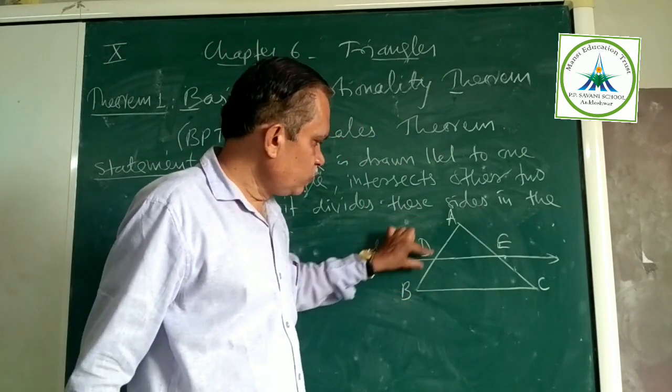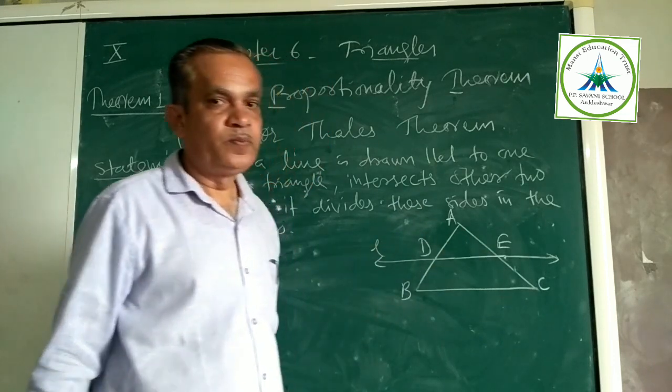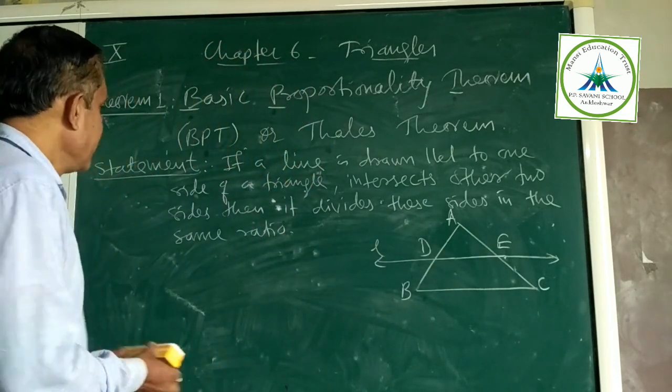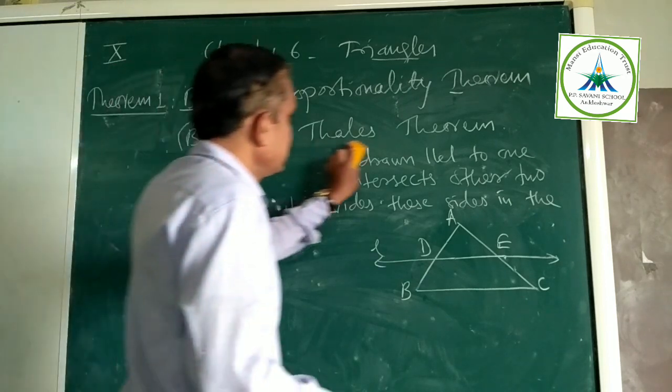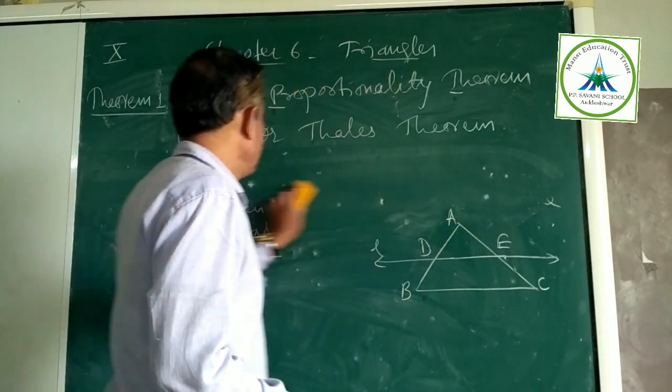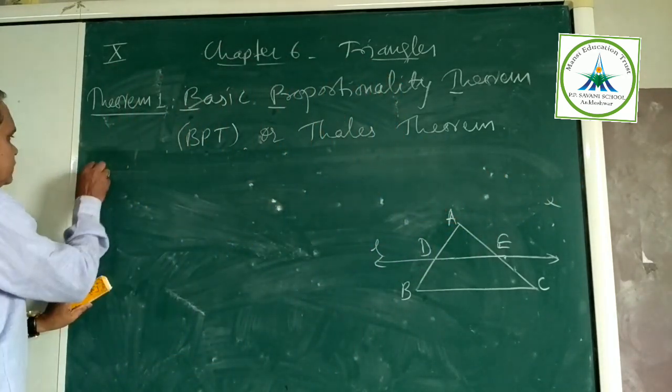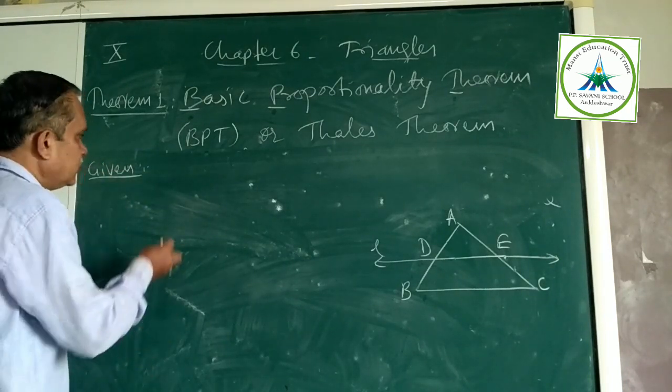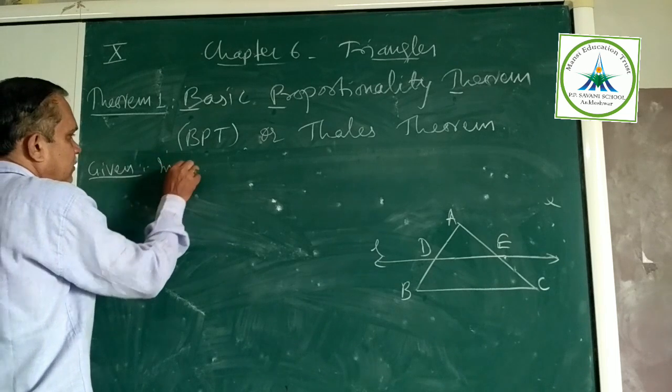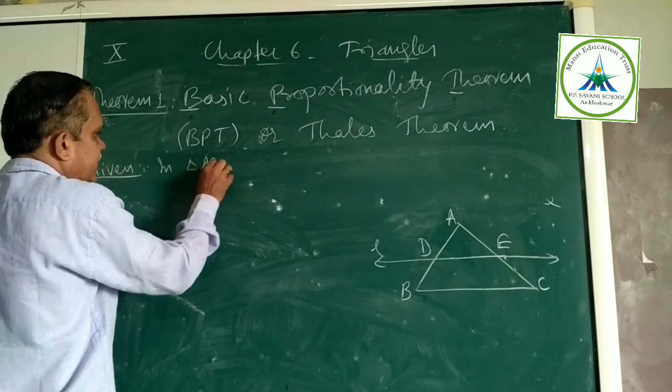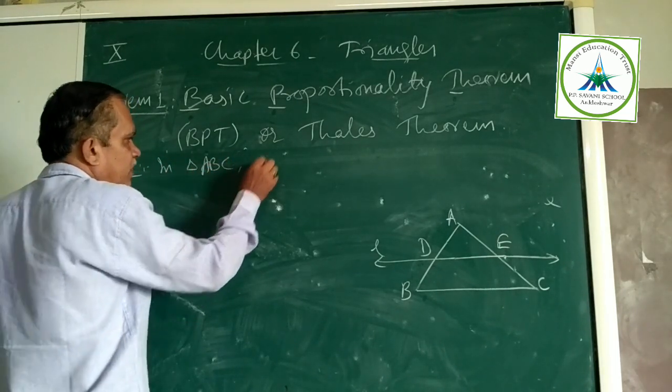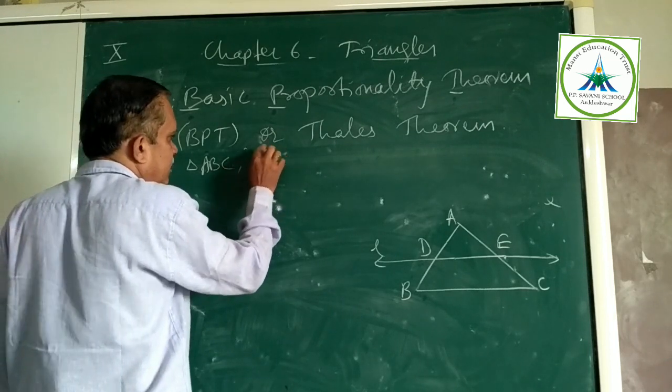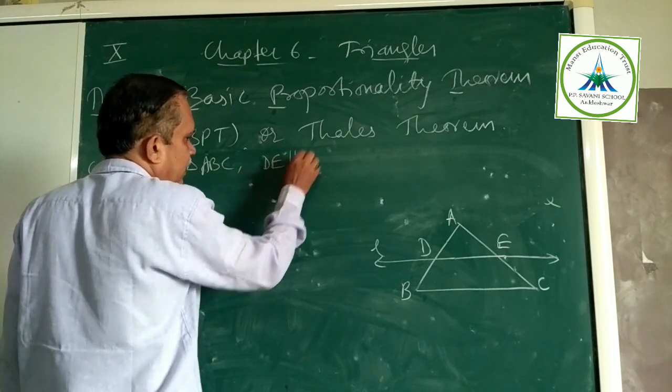Line parallel to one side divides other two sides in the same ratio. So we are writing now. What is Given? Given: In triangle ABC, DE parallel to BC.